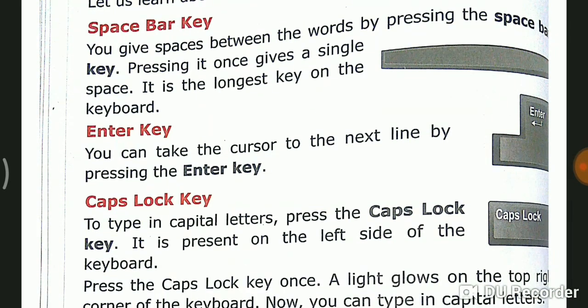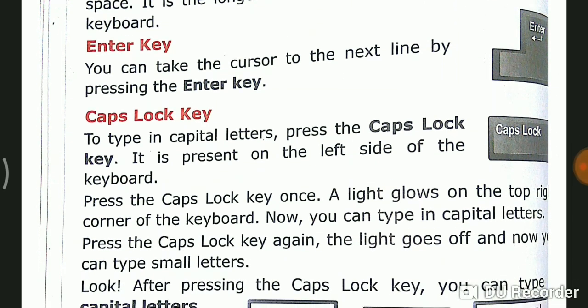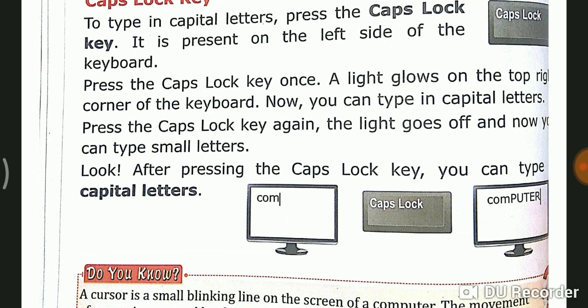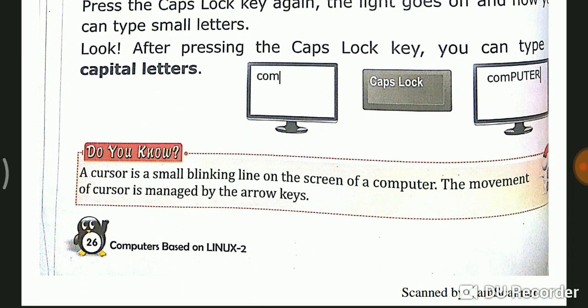Then the enter key. You can take the cursor to the next line by pressing the enter key. Then the caps lock key. To type in capital letters, press caps lock key. It is present on the left side of the keyboard. Press the caps lock key once, a light glows on the top right corner. Press caps lock key again, the light goes off and now you can type again in small letters. Like this, if caps lock key is on, it will be capital. If caps lock key is off, it will be small.